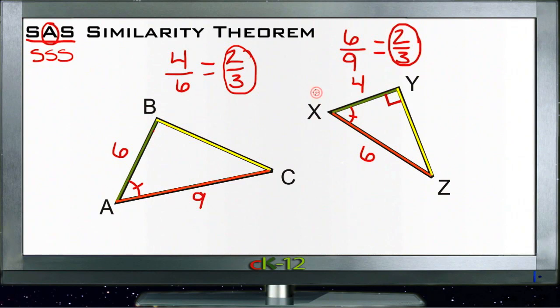And the angle between them, right here, is congruent on both of those triangles. So we can say that those two triangles then are similar.